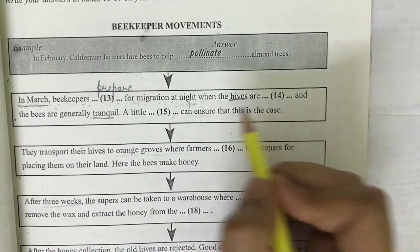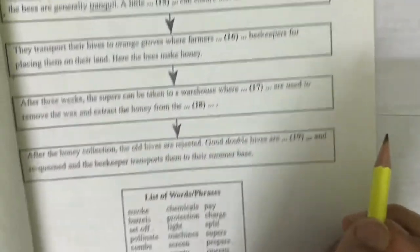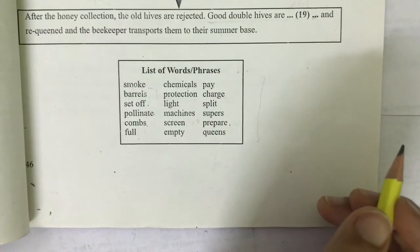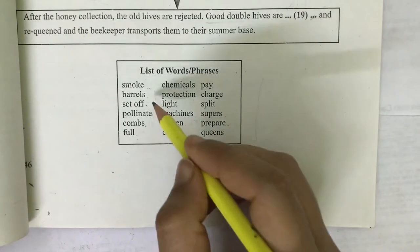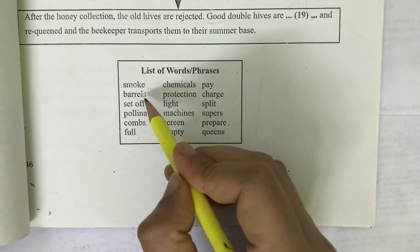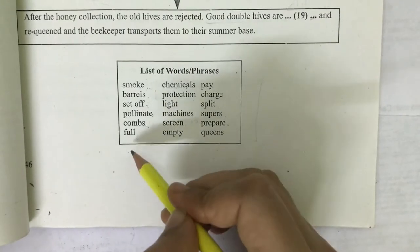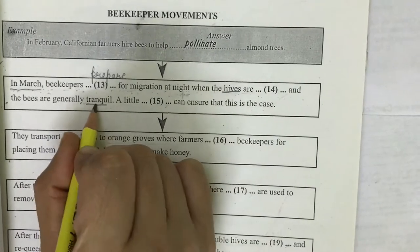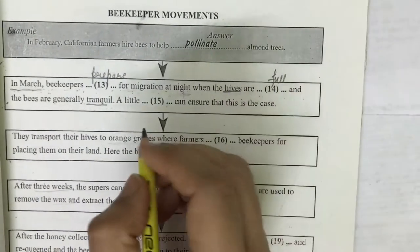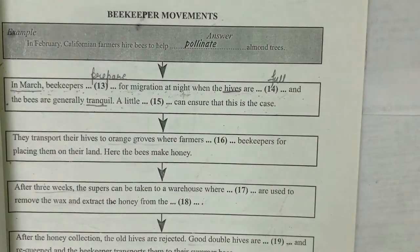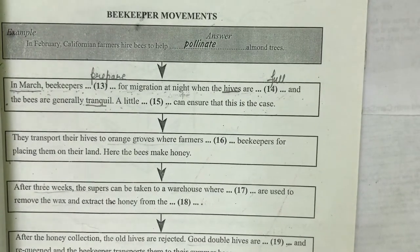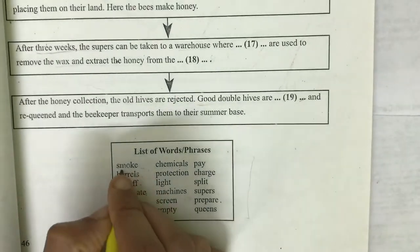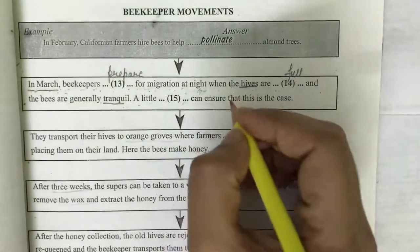When the hives are [blank] — the passage says they don't do anything during daytime, and at night when all the honeybees have settled, they pick them up. So the suitable word here is 'full.' When hives are full and bees are tranquil, they move them. For the third blank — 'a little [blank] can ensure this is the case' — since smoke is used to calm the bees, 'smoke' is the correct answer.